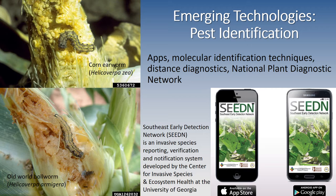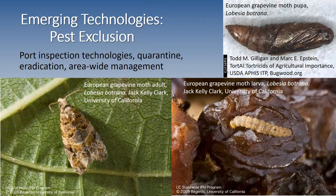A number of apps have been developed by numerous groups and organizations, and many of these tools have been a great aid at the field level because they help us make decisions in real time. Pest exclusion is a technology that can be very useful, including port inspection technologies, quarantines, eradication of pests, and area-wide management. Here we have the three different life stages of the European grapevine moth — it was introduced to California in 2009, and in 2016 they indicated they have successfully eradicated it from California.